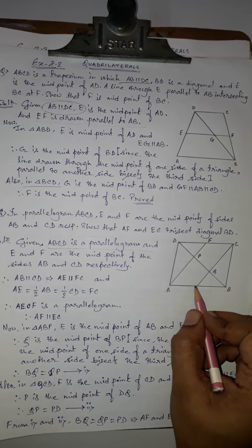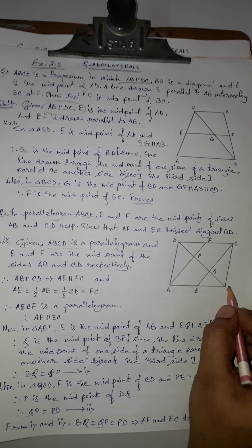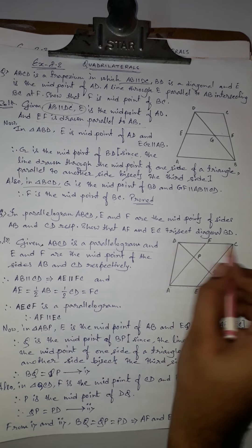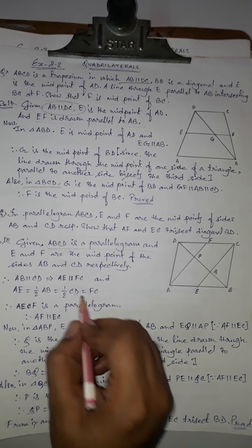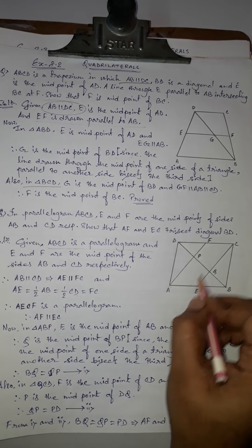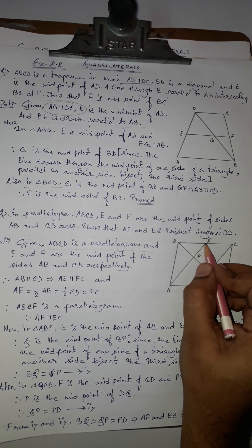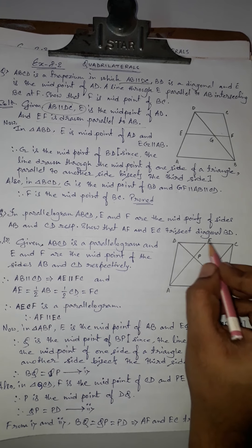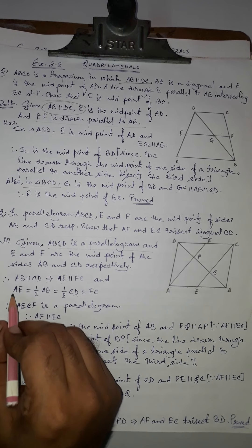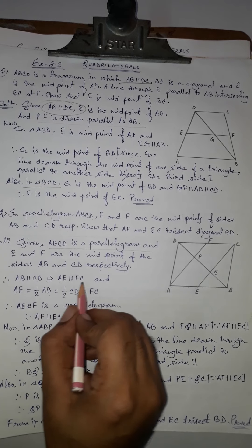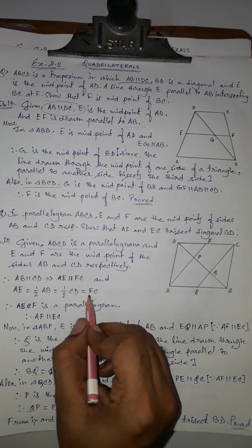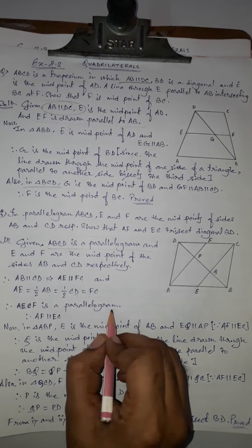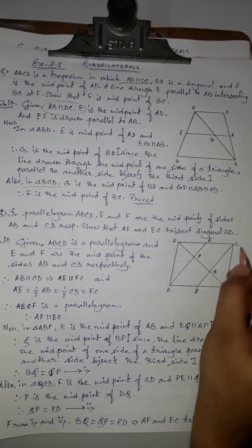Since opposite sides of a parallelogram are equal, AB equals CD, so half of AB equals half of CD. Since F is the midpoint of CD, half of CD equals FC. Therefore AE equals FC. We now have AE parallel to FC and AE equals FC.